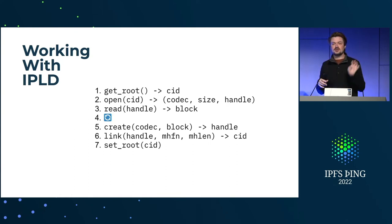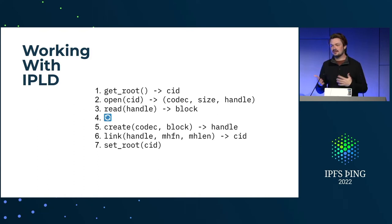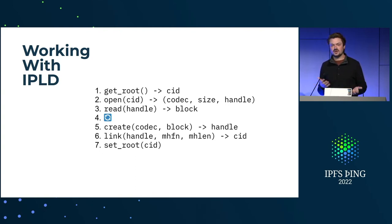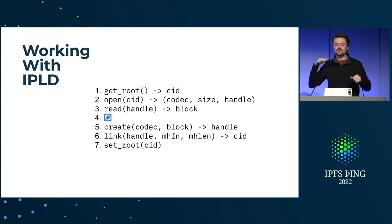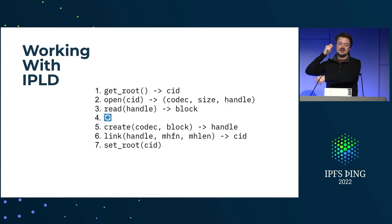To create a block, we tell the system: here's the codec I want to use, here's the block. The system validates that it's a valid block and also checks that we're only linking to state we're allowed to access — you have to be very careful so you can't access state outside your state tree, otherwise you get non-determinism. You get back a handle, and then given that handle you create a new CID. Finally you set your root to the new root CID. So the lifecycle is: get the root, open blocks, read blocks, create blocks, link blocks, and set the new root.